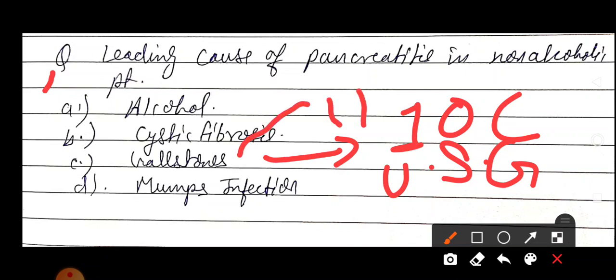If this gallstone migrates and gets stuck inside the CBD, the investigation of choice is MRCP - magnetic resonance cholangiopancreatography. And how to treat if MRCP shows CBD stone?